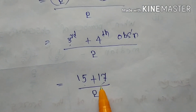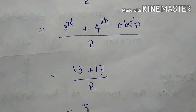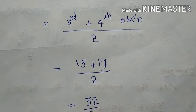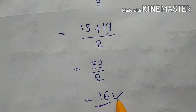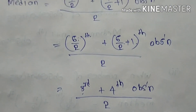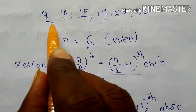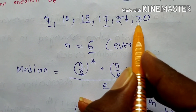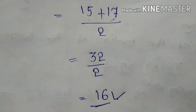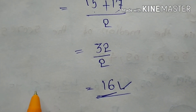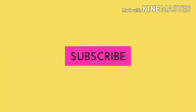15 plus 17 equals 32. So the value is 32/2, which equals 16. Therefore, 16 is the median of the given scores. Thank you.